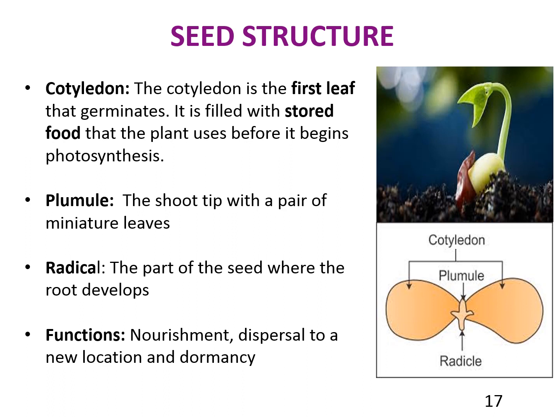The cotyledon is the first to emerge during germination; it is filled with stored food that the young plant will use while growing. The plumule is the shoot tip with a pair of miniature leaves, and the stem develops from it. The radicle is the future root and the part of the seed where the root develops. Seeds serve several functions: nourishment of the embryo, dispersal of seeds to new locations, and keeping the seed dormant during unfavorable conditions.